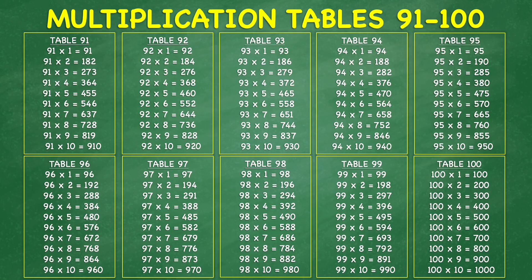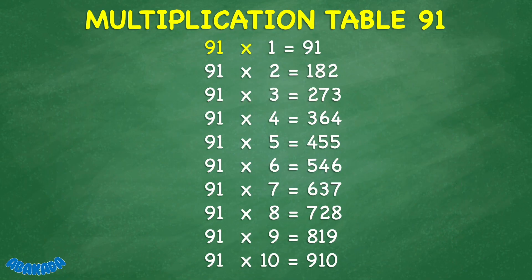Multiplication tables 91 to 100. 91 times 1 equals 91. 91 times 2 equals 182. 91 times 3 equals 273. 91 times 4 equals 364. 91 times 5 equals 455. 91 times 6 equals 546. 91 times 7 equals 637.